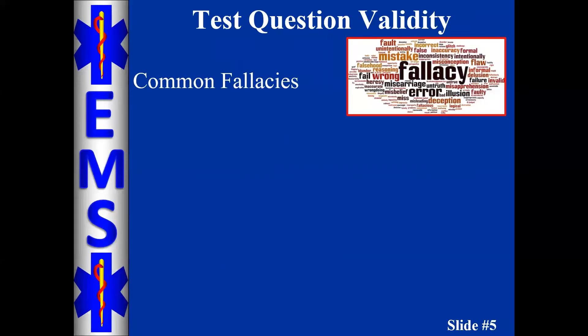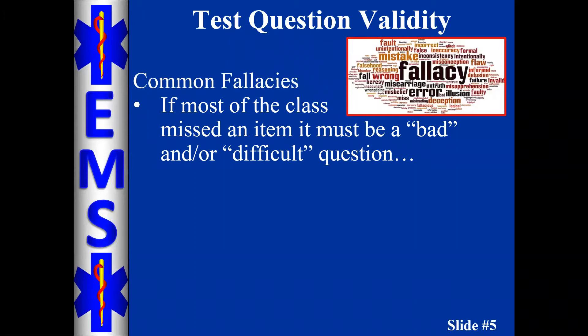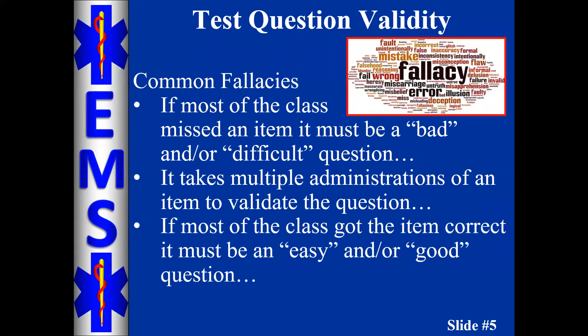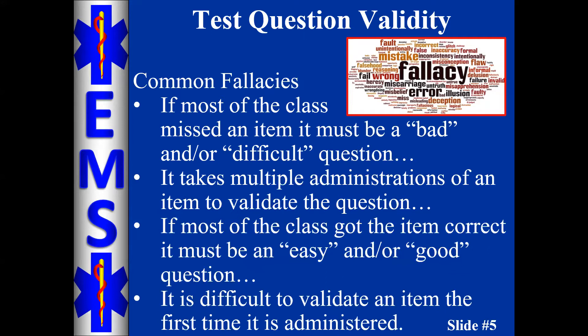There were quite a few fallacies I embraced for many years as an educator in relation to testing, before I learned about discriminatory item analysis. One was that if most of the class missed an item, it must be either bad or really difficult. Another was that it took multiple administrations before I could consider an item valid. A third was that if most of the class got it correct, it must be easy or a good question. And finally, that it's difficult to validate an item on the first administration — when in fact the first administration is the best and most useful data you'll acquire.